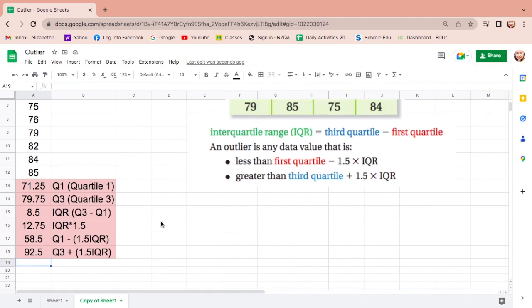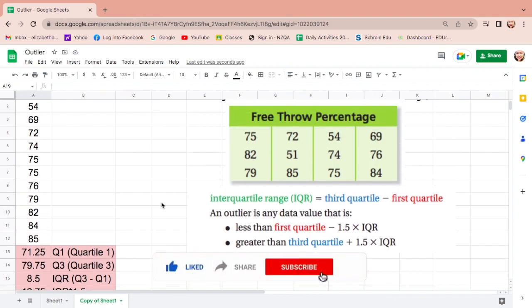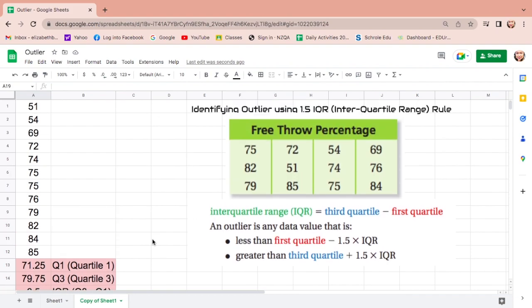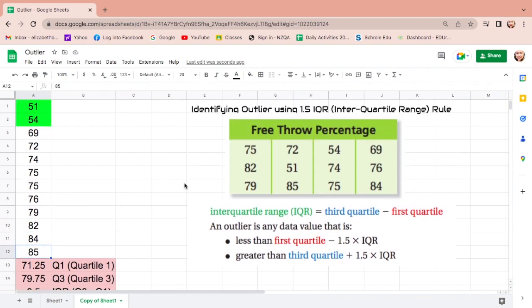Then let us identify if there's an outlier in the free throw percentage problem. So, are there numbers less than 58.5? Yes, we have 54 and 51. So these are our lower outliers. Then, are there numbers greater than 92.5? Since the highest is 85, there's no number greater than Q3. Therefore, the outliers from this data are 51 and 54.